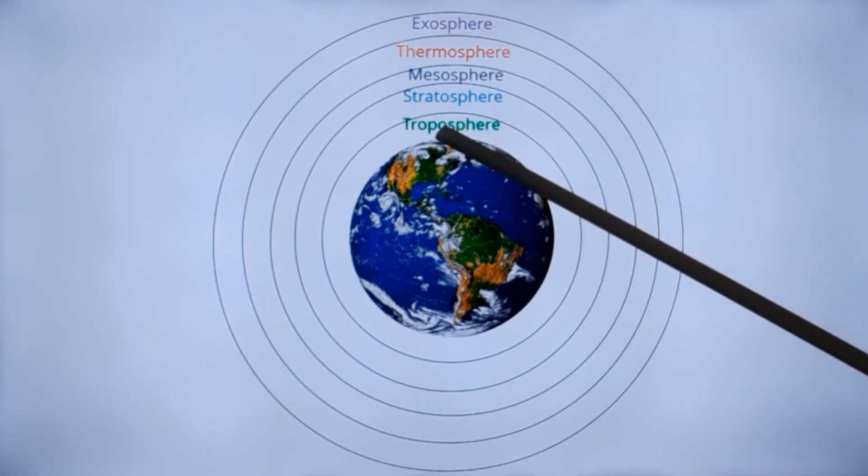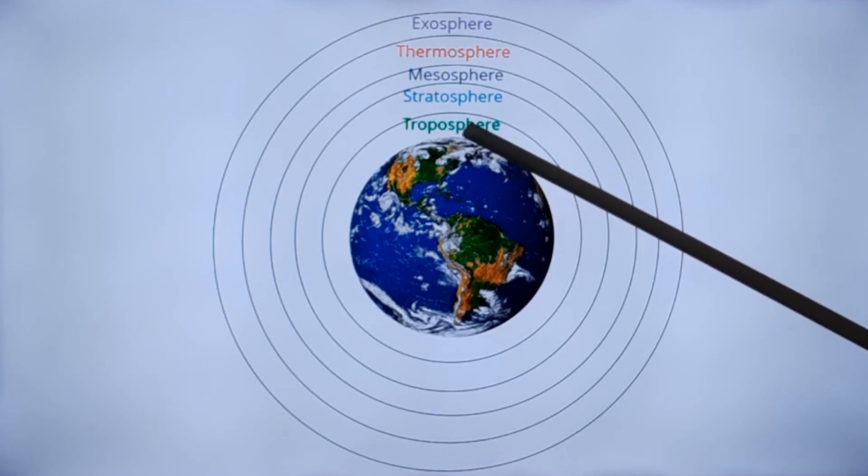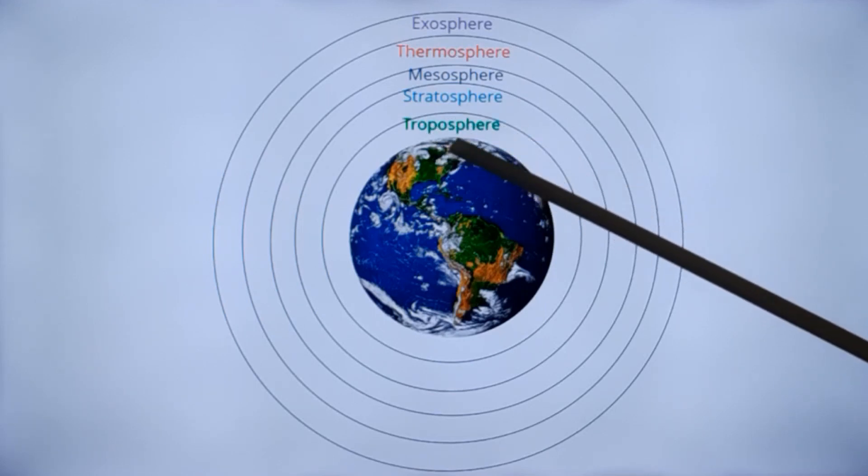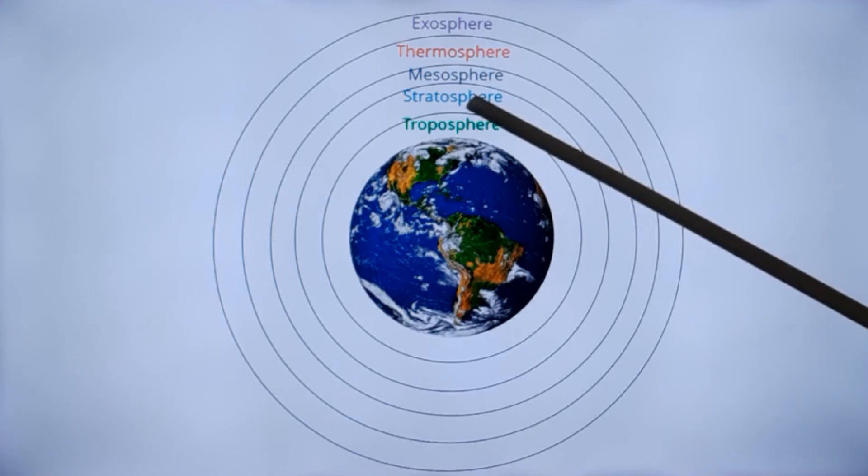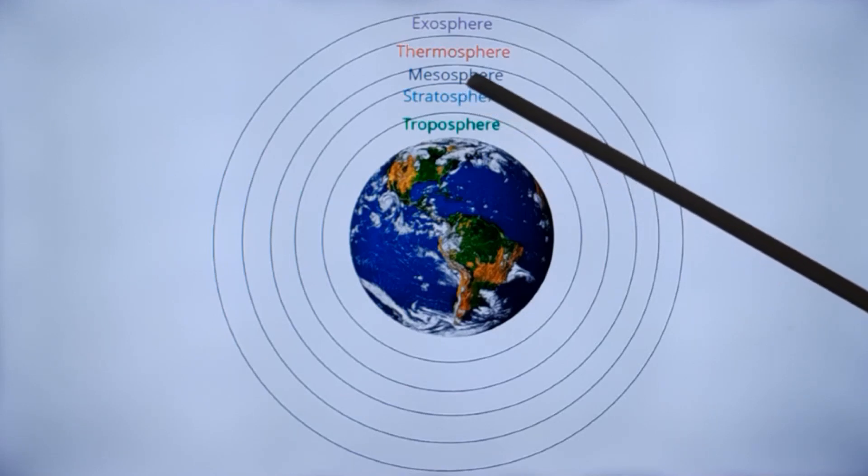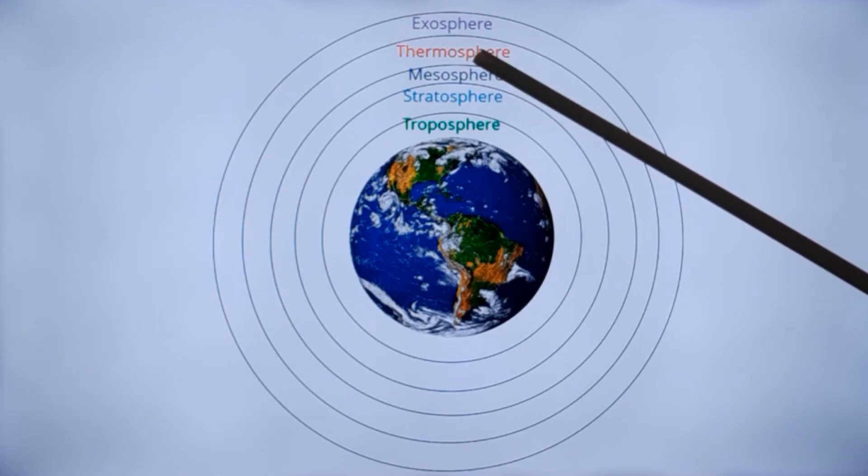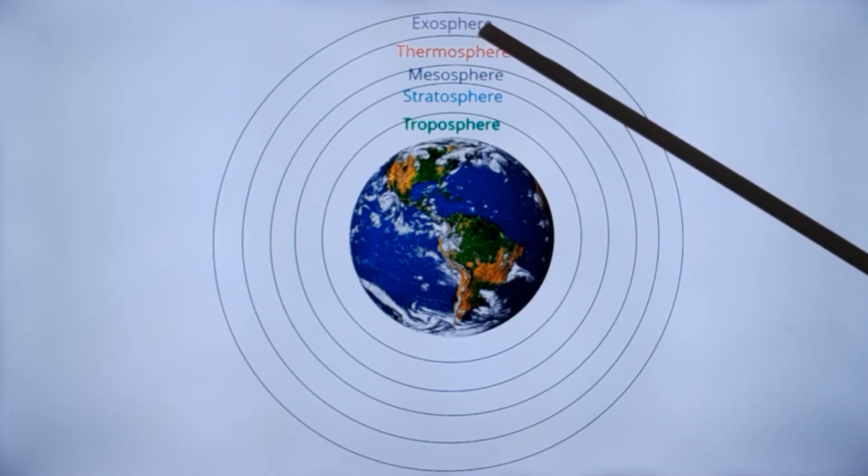These are the layers of the atmosphere. The lowermost is the troposphere, the place where we are all walking about. Then comes the stratosphere. Beyond the stratosphere you have the mesosphere. Still beyond is the thermosphere, and the outermost layer is the exosphere.